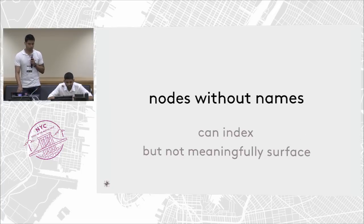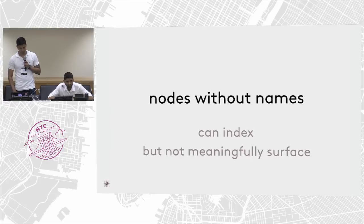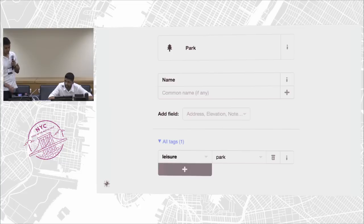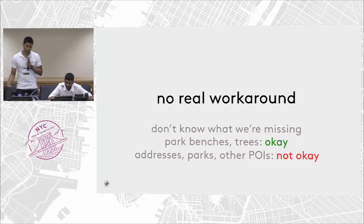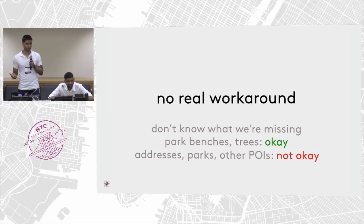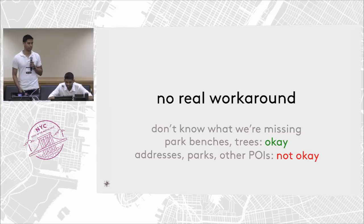Another problem is nodes without names or addresses. This is unfortunately common — some nodes, like this one for instance, are tagged as a park but have no name. There's no real workaround because we don't know what you're missing. If the nodes are park benches, trees, or lampposts, it's okay because no one really is searching for them on a map. But if it's a building, a park, a monument, or a landmark without any name, that is not okay.